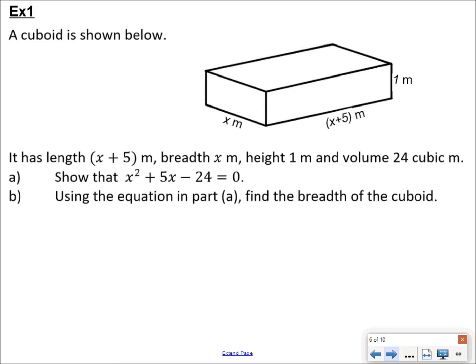Here's an example of the kind of thing that you could come across. You're told that you've got a cuboid, you're given three dimensions, and you're asked to show a particular equation. The reason they've given it to you in the question is so that if you can't do part A, at least you can go on and use it and get part B. So the question has been kind of broken down for you.